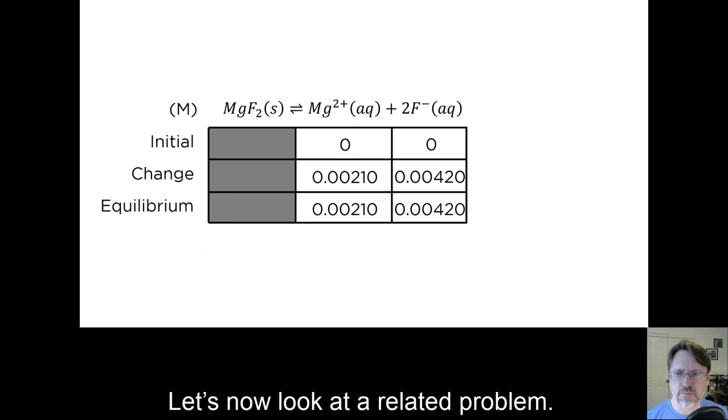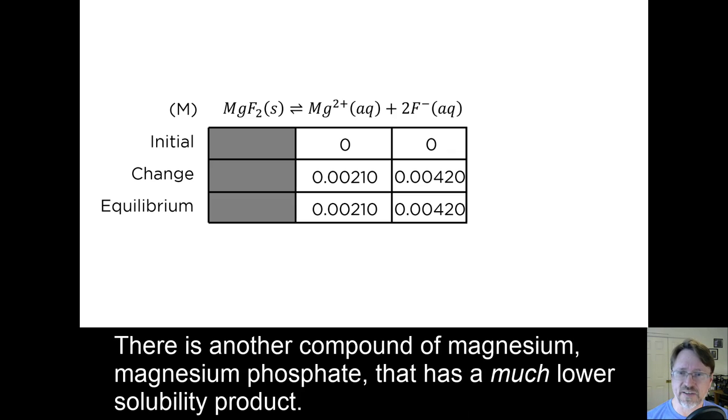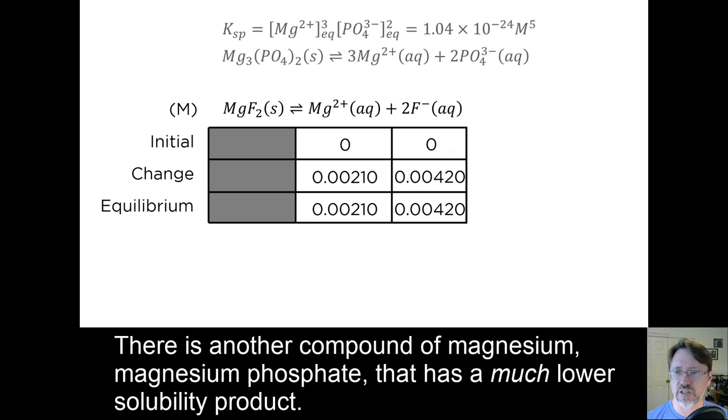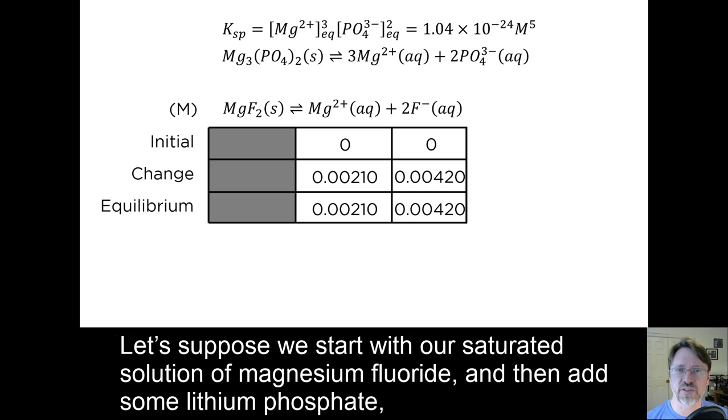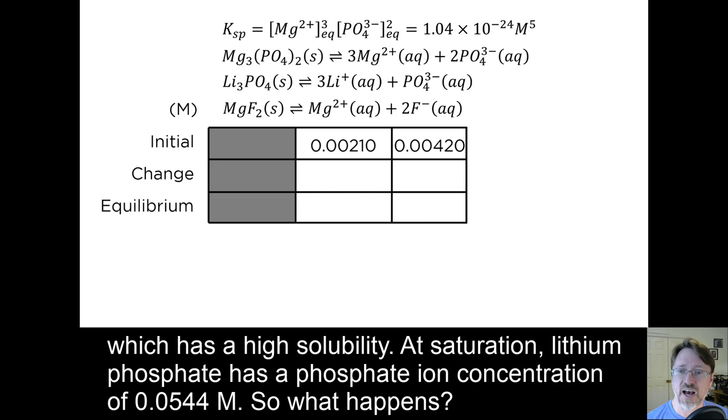Let's now look at a related problem. There is another compound of magnesium, magnesium phosphate, that has a much lower solubility product. Let's suppose we start with our saturated solution of magnesium fluoride, and then add some lithium phosphate, which has a high solubility. At saturation, lithium phosphate has a phosphate ion concentration of 0.0544 molar.